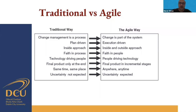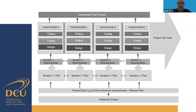Here you see the project lifecycle with several types of implementation, with an incremental final product at the end. Iterations are based on the requirements and are usually guided by an iteration plan. You plan how many iterations you need upfront, and these come from the product backlog — a list of known requirements — along with a release plan.